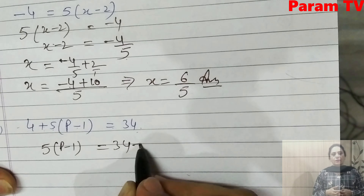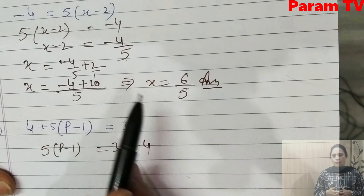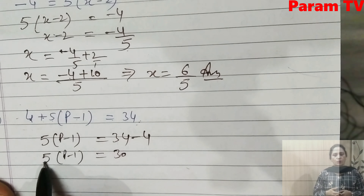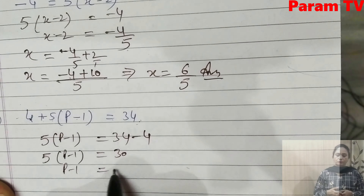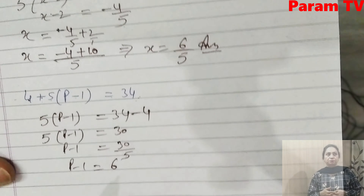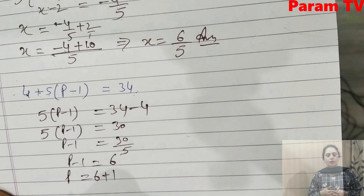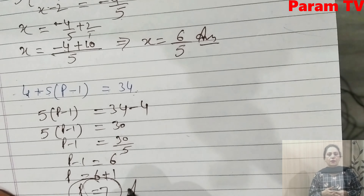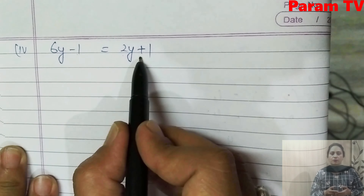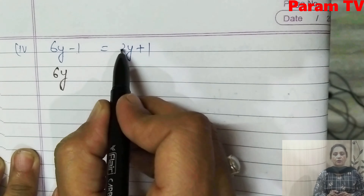Next part: 4 + 5(p - 1) = 34. So 5(p - 1) = 34 - 4 = 30. The 4 changes side and becomes minus 4. Now divide by 5: p - 1 = 6. So p = 6 + 1 = 7. Therefore p = 7 is the solution.